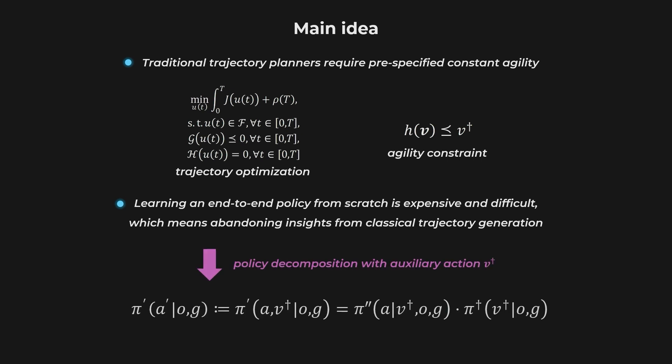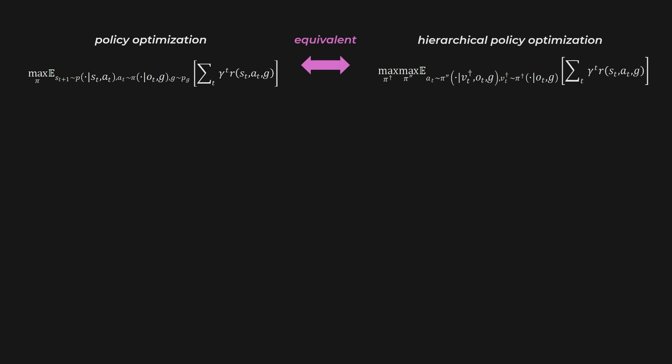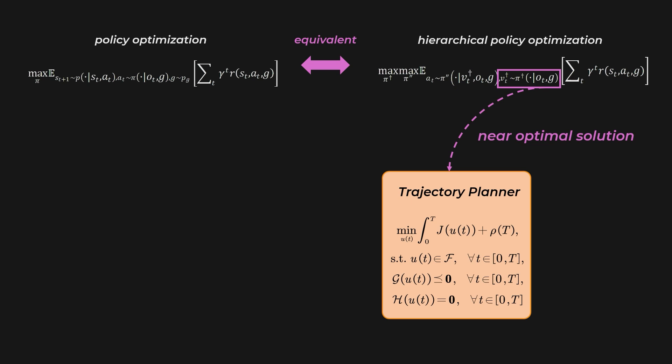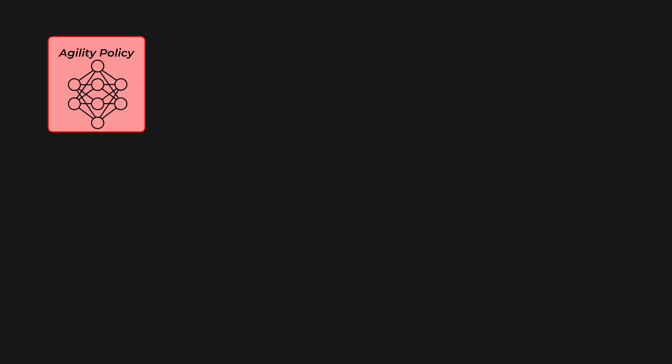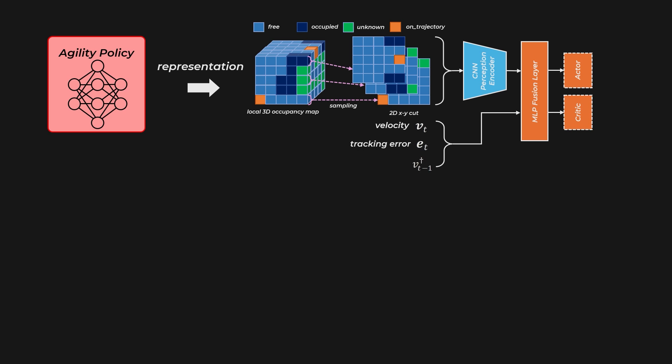We formalize our idea through a policy decomposition in which B-Dagger, the agility level, serves as an auxiliary action that expands the action space. In this way, the vanilla policy optimization problem is equivalently transformed into a hierarchical policy optimization problem. We consider the model-based trajectory planner to be a near-optimal solution for the inner-loop sub-policy, so only the agility policy needs to be learned. We design an ad hoc input space and use a neural network containing a perception module to represent the agility policy.